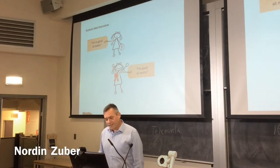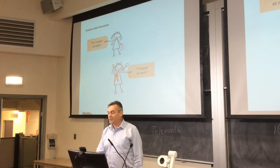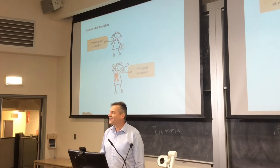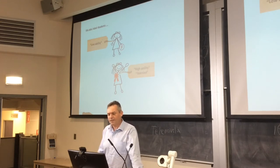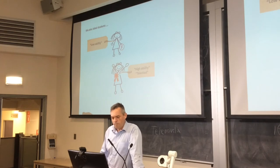Students have a terrible way of labeling themselves. These are the two classic labels you'll see: I'm no good at maths or I'm really good at maths. And to these student-attached labels, we have a great way of attaching our own labels onto them: low ability, high ability.